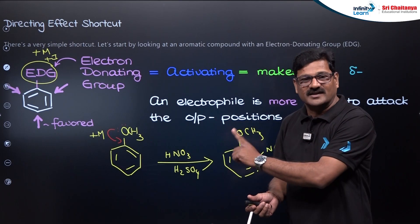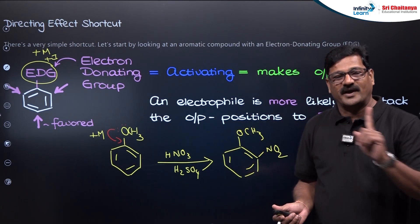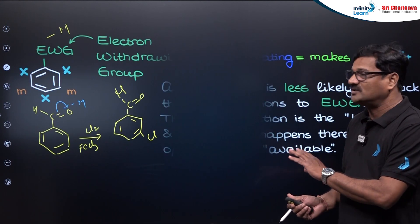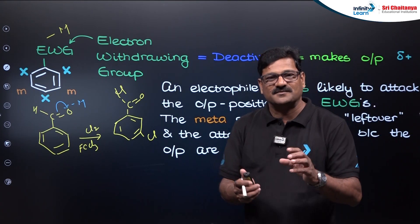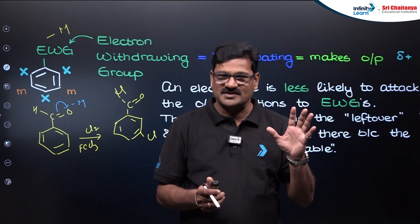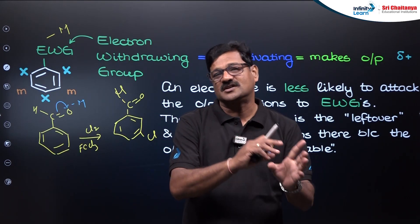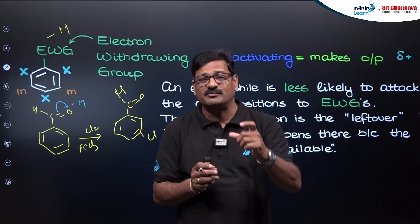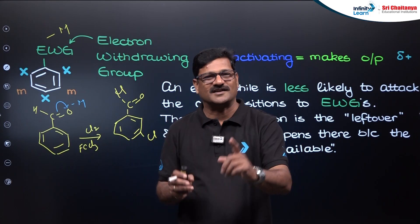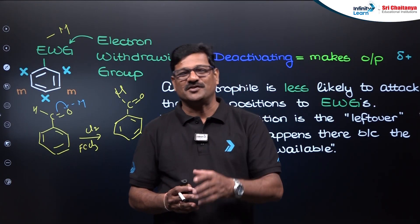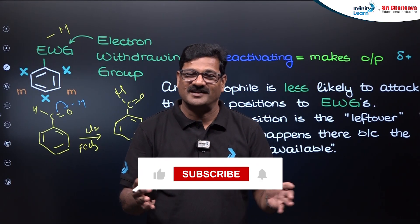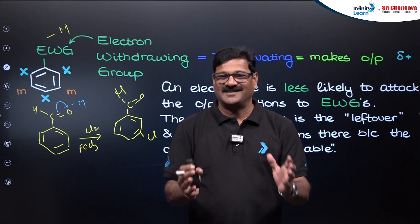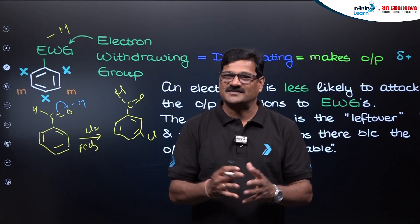Whenever the ring is activated it is an ortho and para director, and whenever the ring is deactivated it gives the meta product. These five golden reactions of benzene give you insight into what conversions are possible. This session helps you crack many questions in the NEET examination. Please like this session, share it with your friends, and subscribe to the Infinity Lane NEET YouTube channel for more useful reactions and sessions.